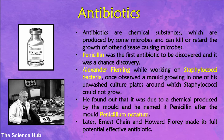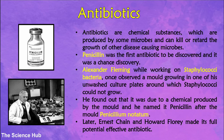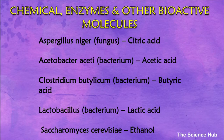Antibiotics are chemical substances produced by some microbes that can kill or retard the growth of other microbes. Penicillin was the first antibiotic to be discovered, and it was a chance discovery. Alexander Fleming, while working on Staphylococci bacteria, once observed a mold growing in one of his unattended culture plates around which Staphylococci could not grow. He found that it was due to a chemical produced by the mold, and named it after the mold Penicillium notatum. Later, Ernest Chain and Howard Florey established its full potential as an effective antibiotic.